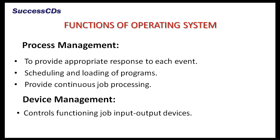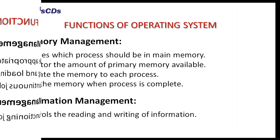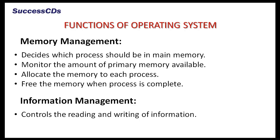The functions of an operating system. Process management: to provide appropriate response to each event, scheduling and loading of programs, and provide continuous job processing. Device management: it controls the functioning of input-output devices. Memory management: it decides which process should be in main memory, monitors the amount of primary memory available, allocates memory to each process, and frees the memory when a process is complete. Information management: this controls the reading and writing of information.